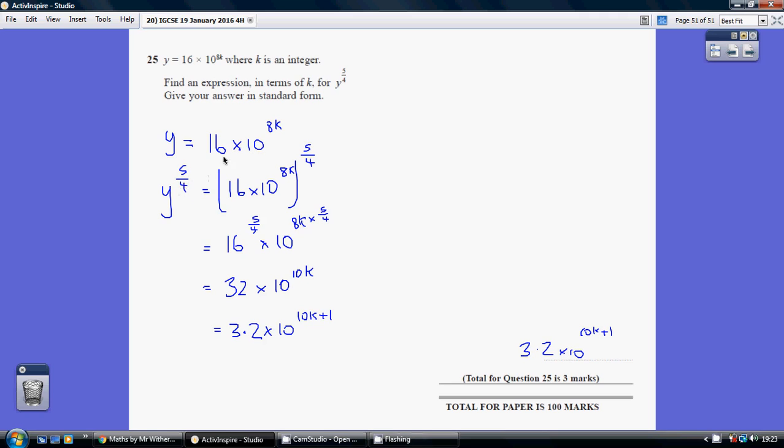So therefore that's going to equal this to the power of 5 over 4, which is this. So attaching the power of 5 over 4 to both parts here, this is going to be 16 to the power of 5 over 4 multiplied by 10 to the power of 8k times 5 over 4.